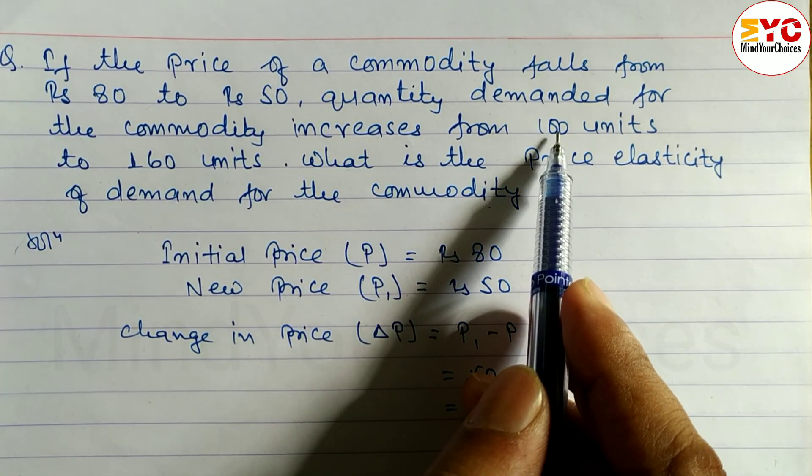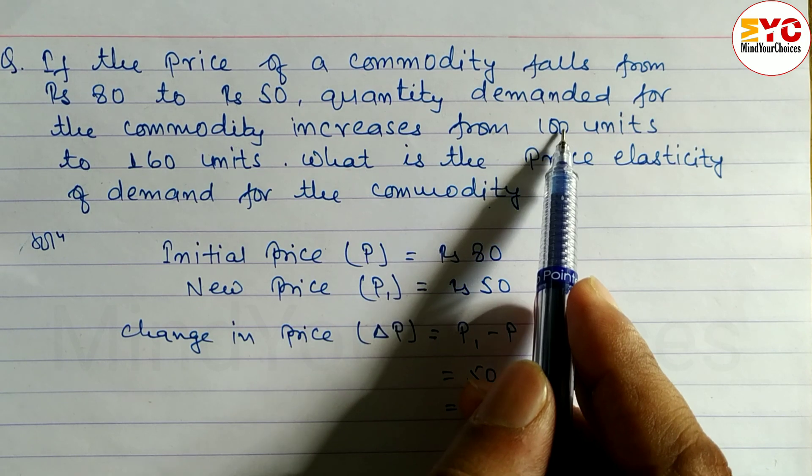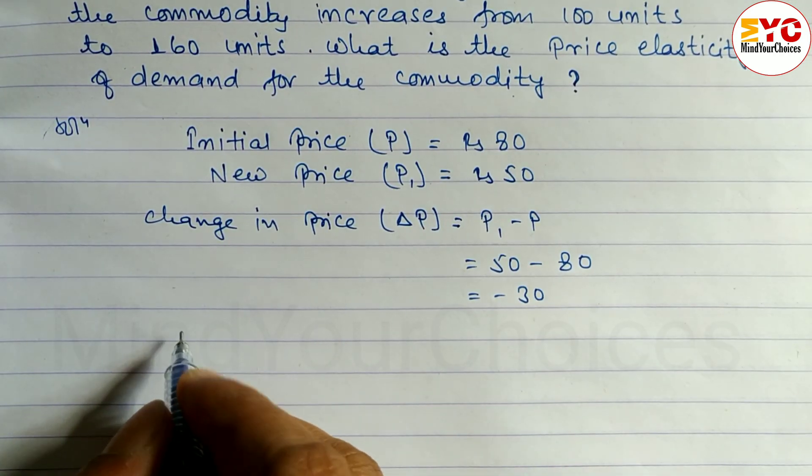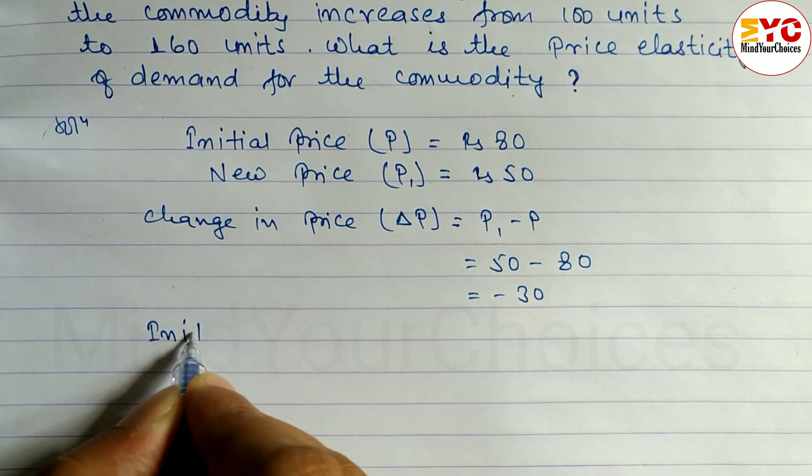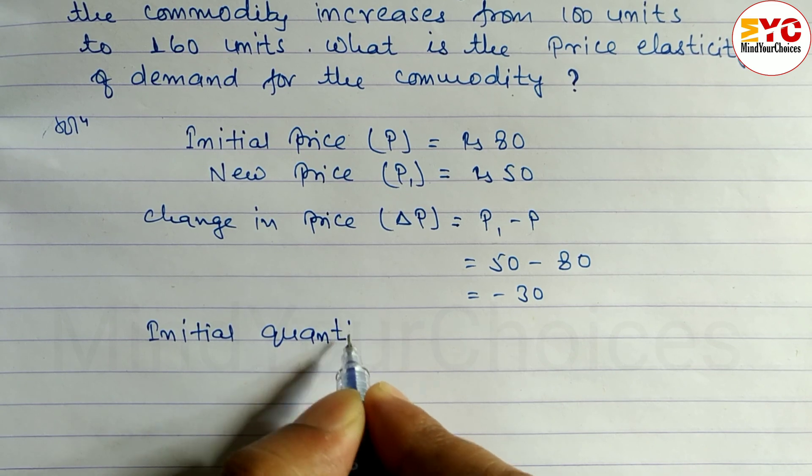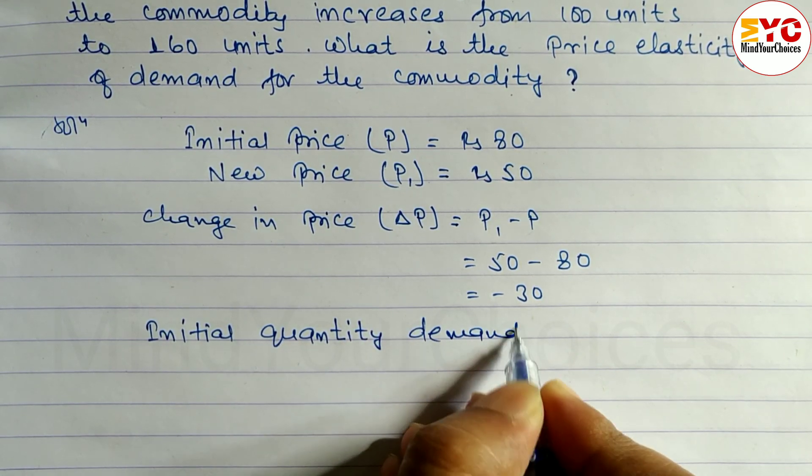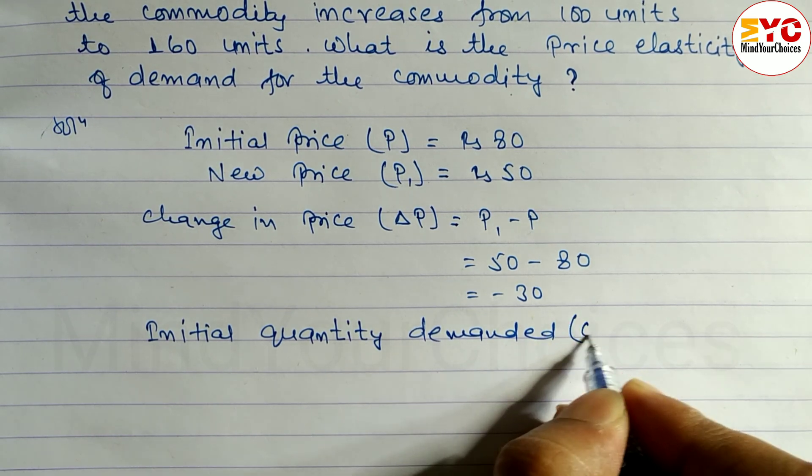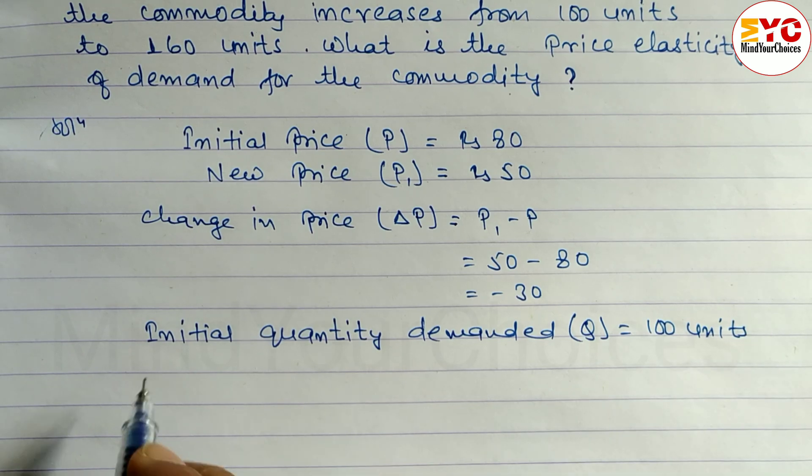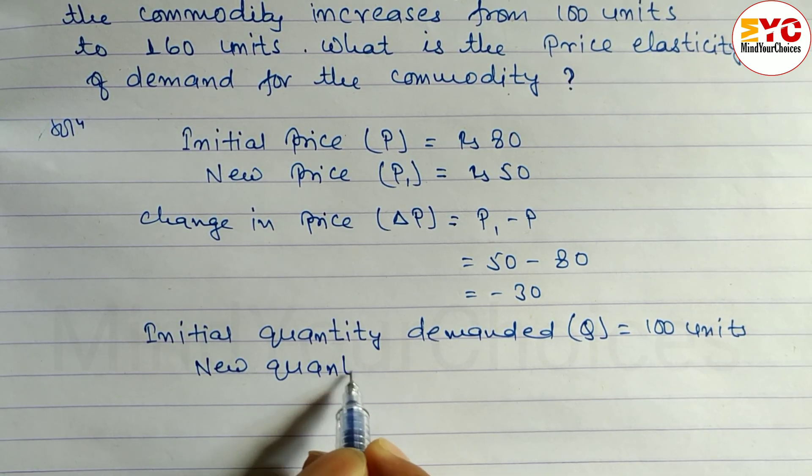Our initial quantity was 100. As price decreased, quantity demanded increased to 160. So here initial quantity demanded, which is denoted by Q, is equal to 100 units.